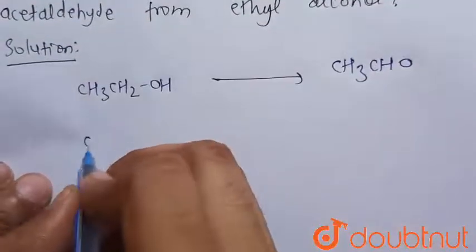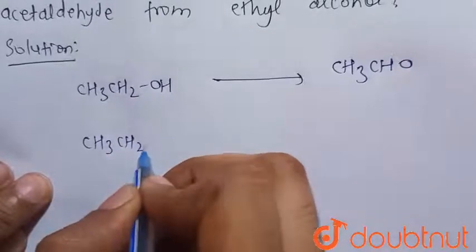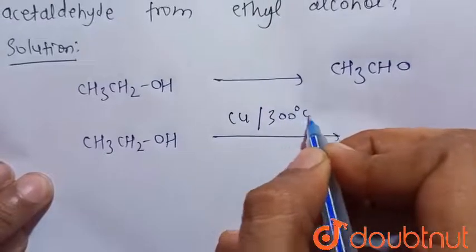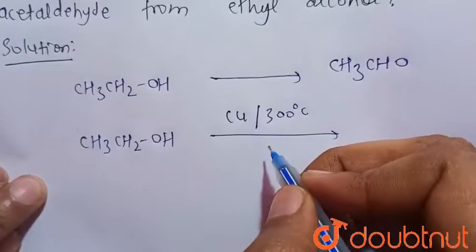When ethanol is treated with copper in presence of 300 degrees Celsius temperature or 573 Kelvin temperature, it oxidizes directly.